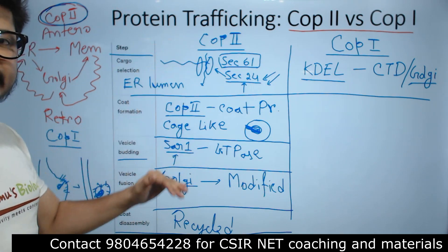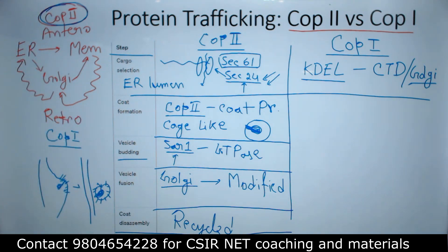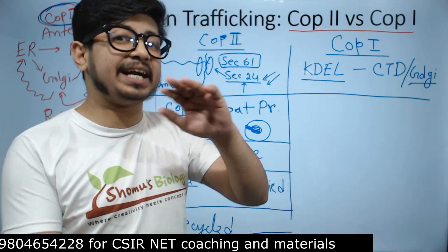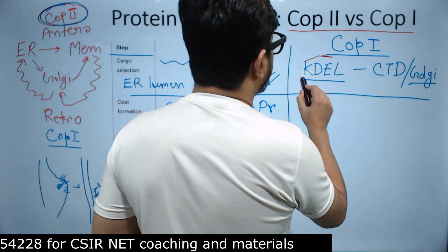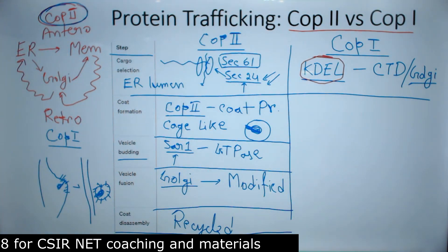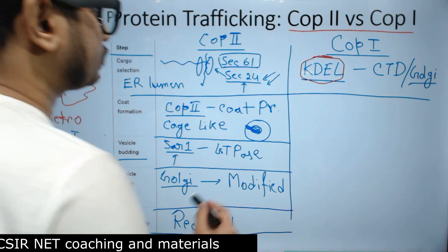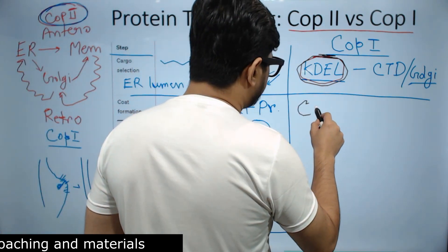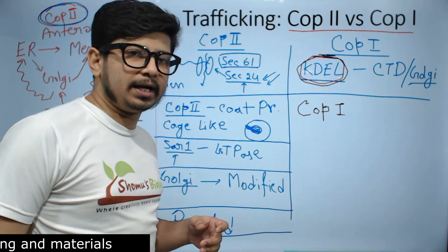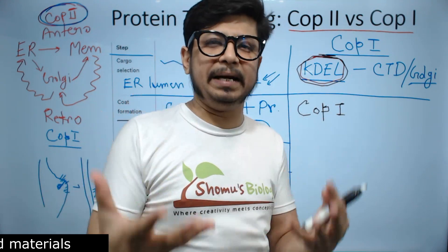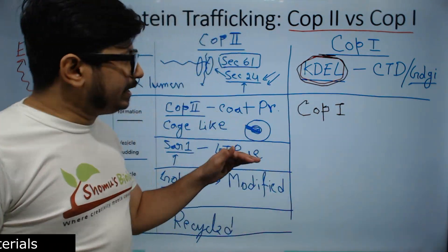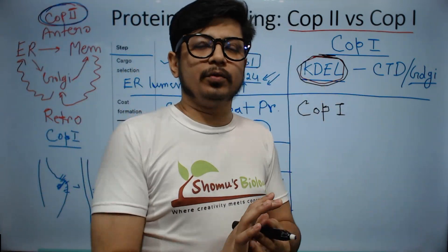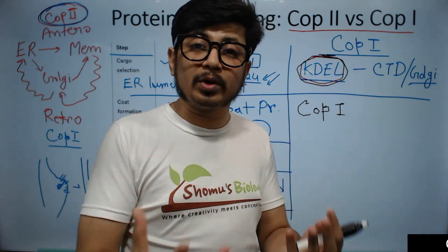These are the steps of COP2-mediated protein trafficking. Now for COP1-mediated pathway, which is the retrograde pathway occurring in reverse: when a protein carries the KDEL signal, that signals it is ready for retention and reversal. Coat formation is again done by COP proteins — here COP1. There is a minor structural difference between vesicles built by COP2 and COP1. The KDEL signal directs the protein to move from the Golgi back in the retrograde direction as a protein retention signal.